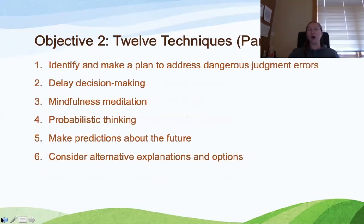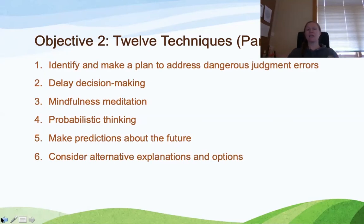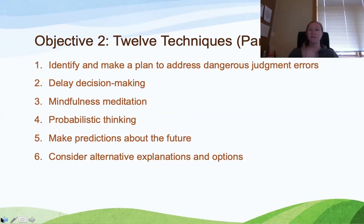There are 12 techniques — 12 things you can do to prevent judgment errors. Similarly to the eight-step decision-making process and the five questions to avoid judgment errors, these won't necessarily come as a surprise. But knowledge is not the same as action. It's one thing to know it; it's another thing to do it. This sets the framework for how we're going to talk about these things and practice them in our day-to-day decision-making.